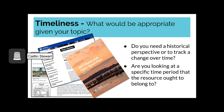What would be an appropriate timeliness for a given topic varies based on both topic and context. Do you need a historical perspective or to track a change over time? If so, you might need sources that range from very old to quite recent. Are you looking at a specific time period? If you were looking at how parks in Seattle changed between 1910 and 1925, your sources ought to reflect that. Even if you need the most recently available information, what is considered recent varies. Sometimes you will hear people say published in the last five years — a good ballpark figure — but it would likely be shortened for science, politics, and medicine, and more extended for history and English.